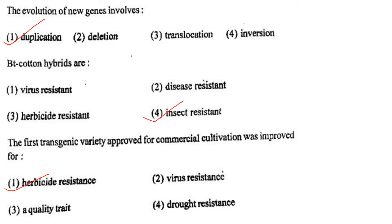Next one: The evolution of new genes involves option 1, duplication; option 2, deletion; option 3, translocation; option 4, inversion. Answer is option 1: duplication.